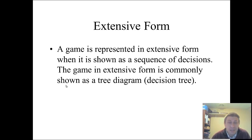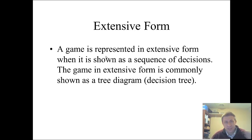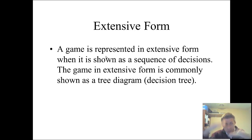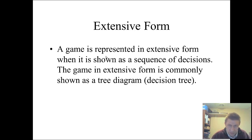A game is represented in extensive form when it's shown as a sequence of decisions. If a game is sequential, the game tree makes sense because in a payoff matrix you have no idea of the timing or sequence of events without more information. Whereas if you're shown a tree diagram, you know who's moving first, second, third, fourth — everything is laid out in the tree. It intuitively fits more with sequential games.